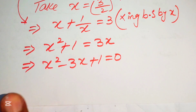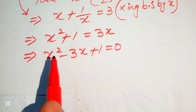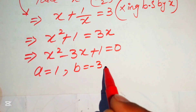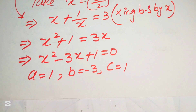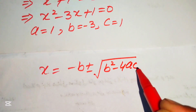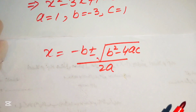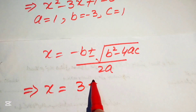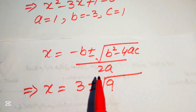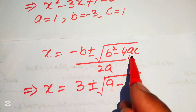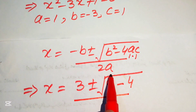This is a quadratic equation. Using the quadratic formula with a = 1, b = -3, c = 1: x = (-b ± √(b² - 4ac)) / (2a) = (3 ± √(9 - 4)) / 2 = (3 ± √5) / 2.